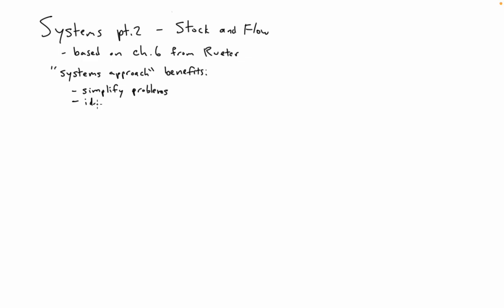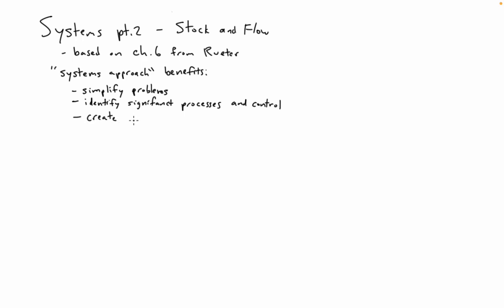It helps to identify what the key processes are and what controls the situation — what are the main things that are sort of running things. Taking the systems approach helps identify what those key things are.